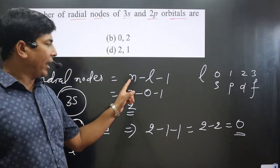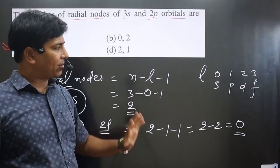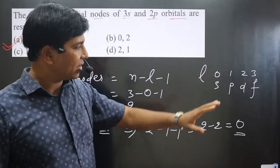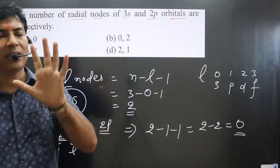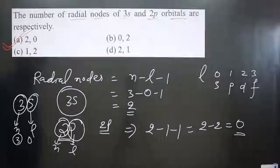Radial nodes equals n minus l minus 1. From here we can determine: if the orbital is given, we can identify and find out l value.